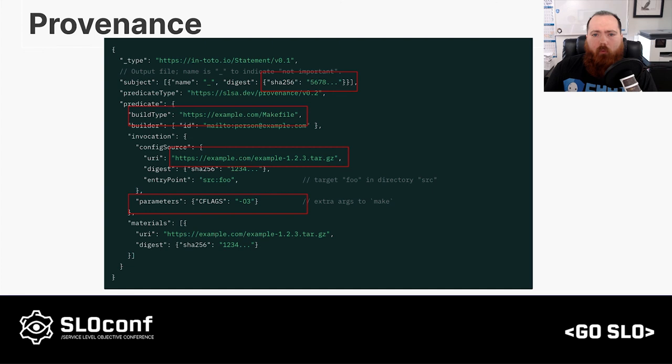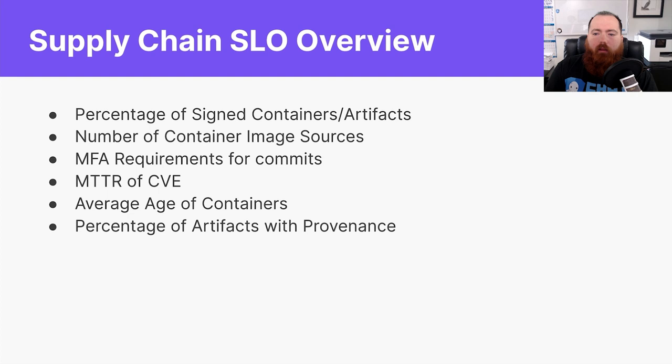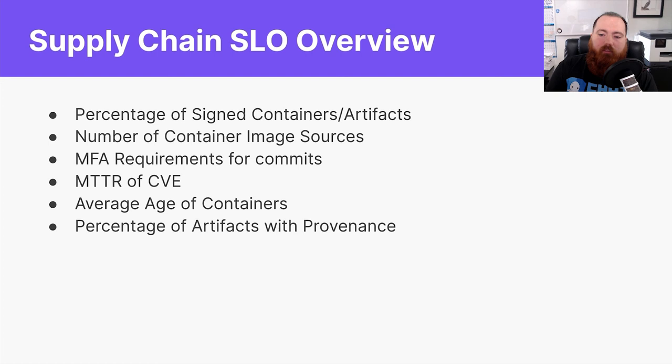The provenance gives users verifiable information about software artifacts, describing where, when, and how software was produced. Being able to identify how your software is built with provenance — and reducing the resolution time of a CVE — can help keep your containers and your software young and healthy. Signing your provenance and the artifacts themselves lets others trust that software is from your organization. Some of these help increase the SLSA levels of your project, and all of them help increase the security of your software supply chains.